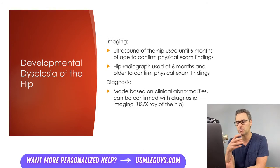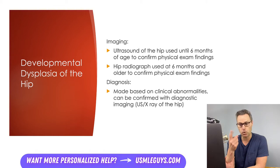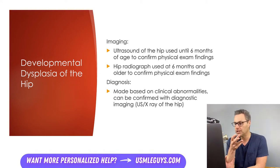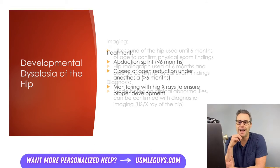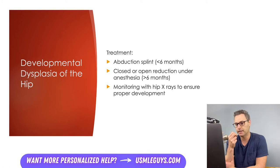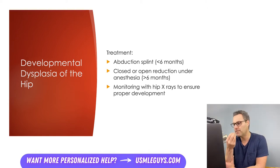Imaging to identify this condition includes an ultrasound of the hip up until the patient is six months of age, which can confirm the presence of an abnormal hip joint. After six months, hip radiographs are used to help identify hip positioning. The diagnosis is made based on clinical abnormalities confirmed with diagnostic imaging — either ultrasound or x-ray depending on the patient's age. Without appropriate diagnosis and treatment, patients are at increased risk of lifelong pain, poor hip mobility, and early osteoarthritis. Treatment focuses on ensuring consistent concentric reduction of the hip so that the femoral head and acetabulum develop appropriately.